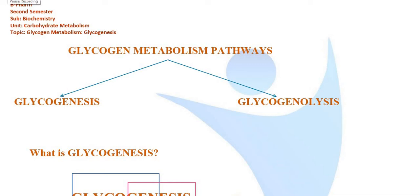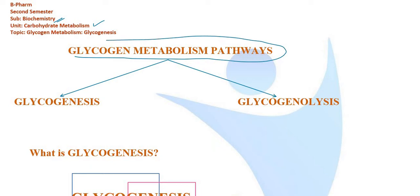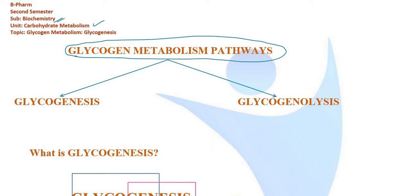Hello friends, welcome to Pre-Prite Academy. This session is at the second semester level. The biochemical topic from the unit carbohydrate metabolism is glycogen metabolism.